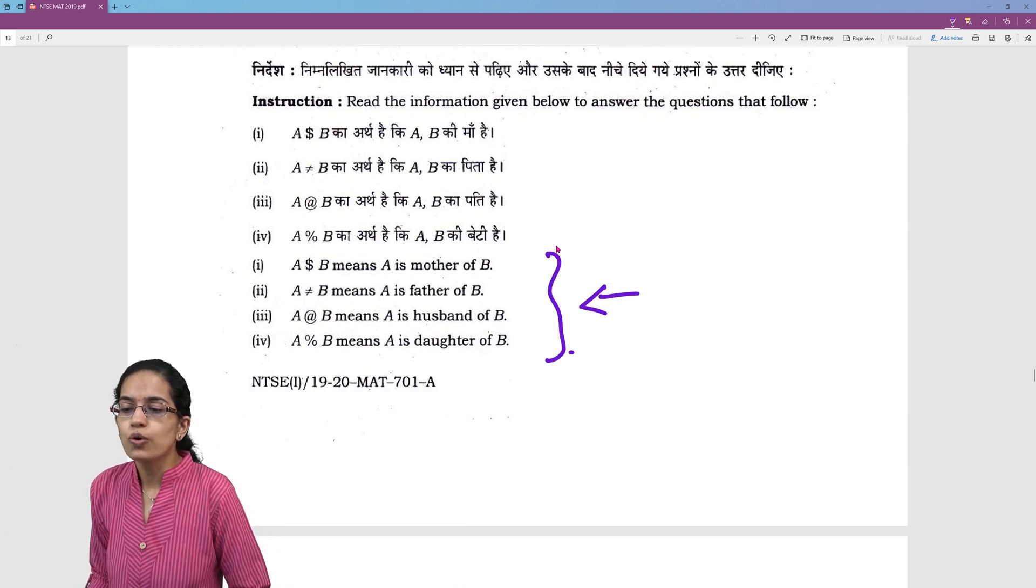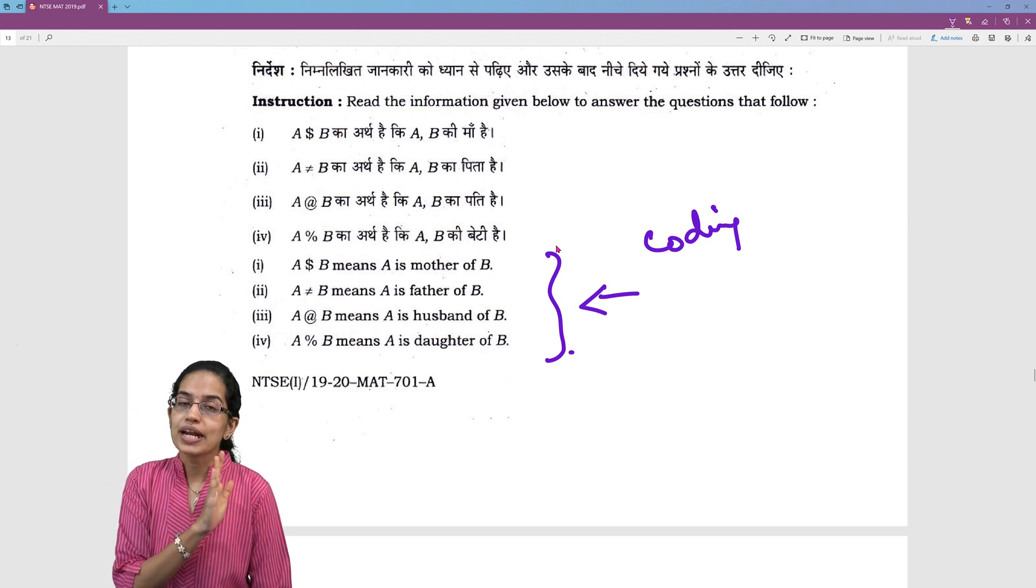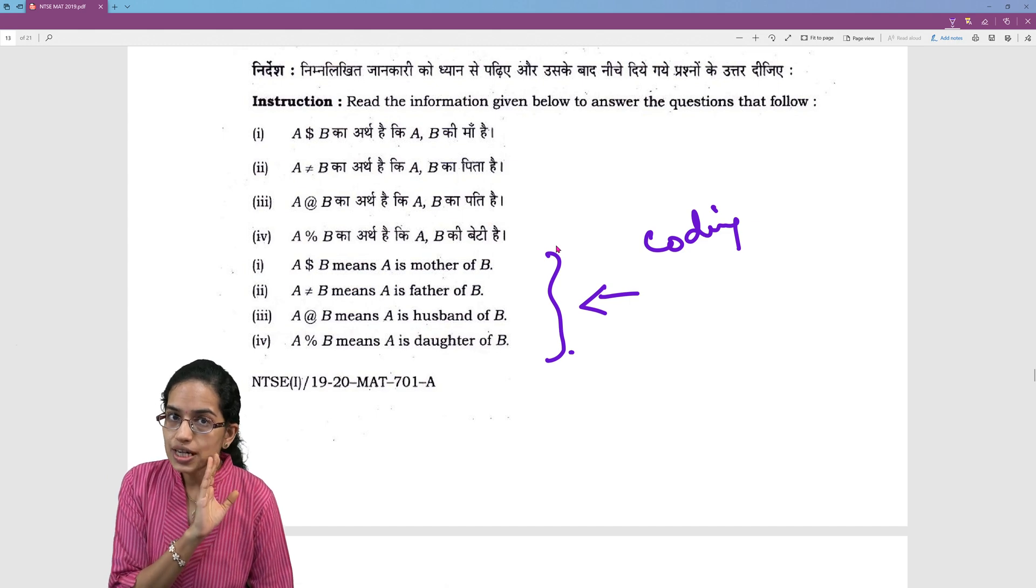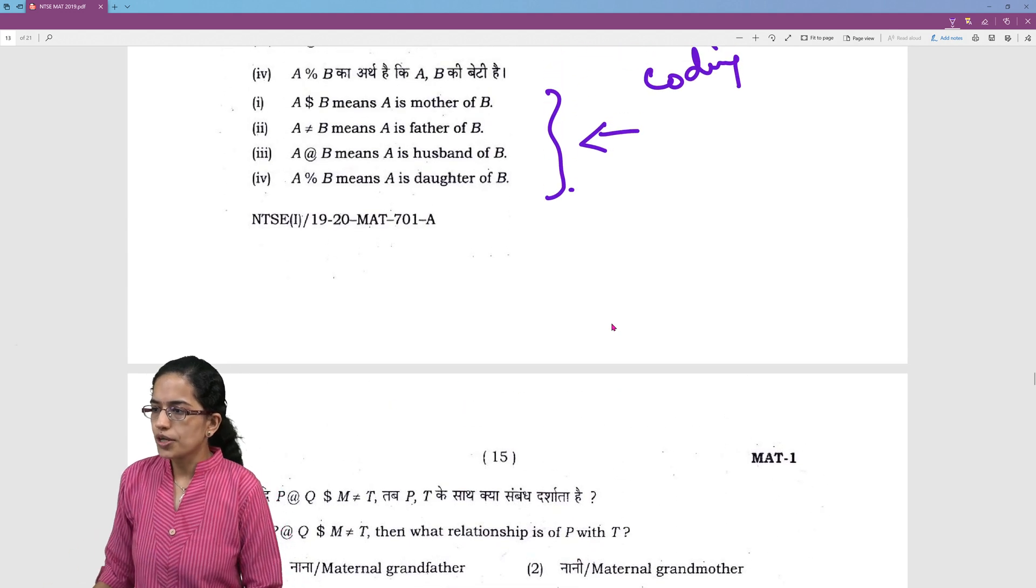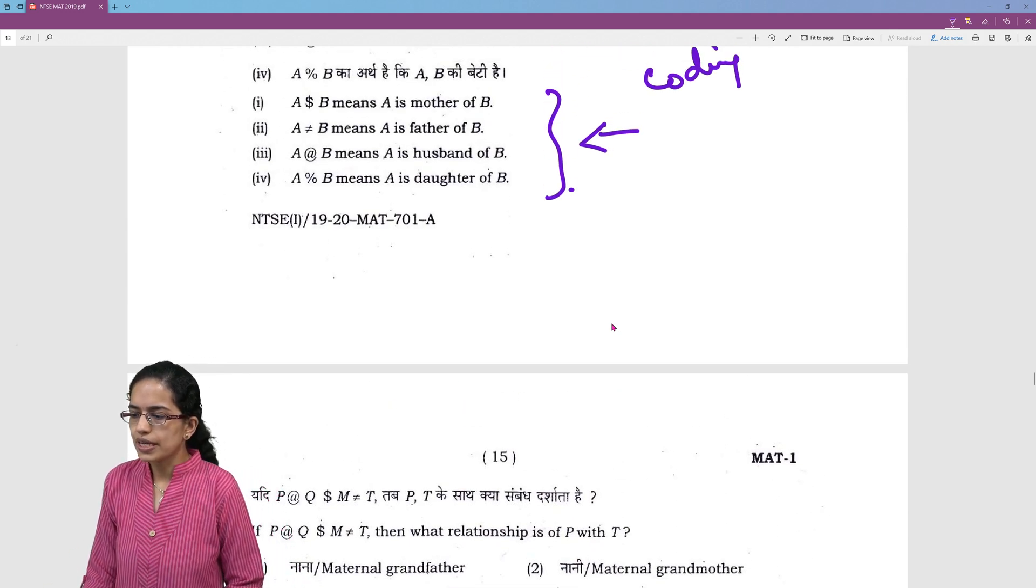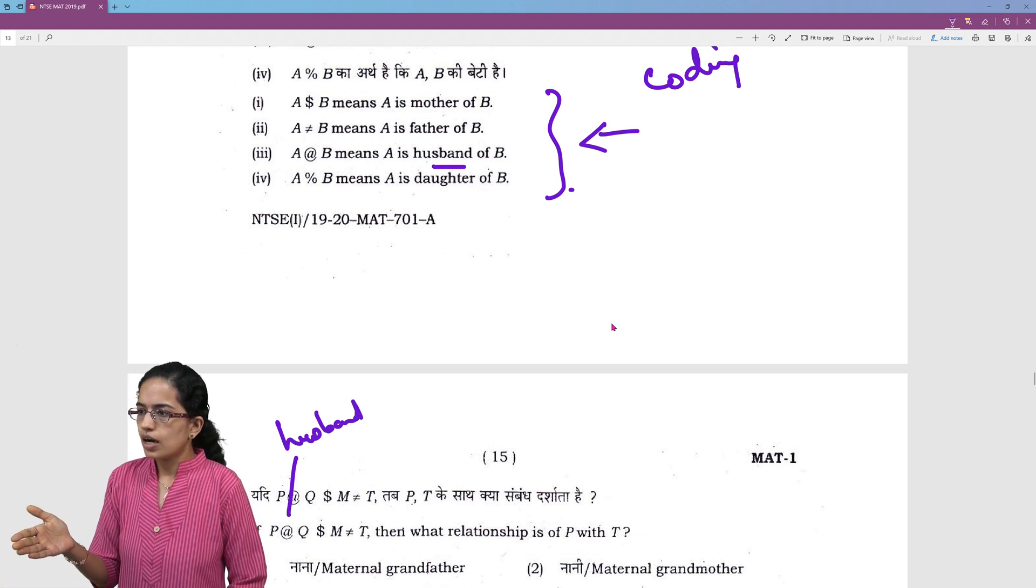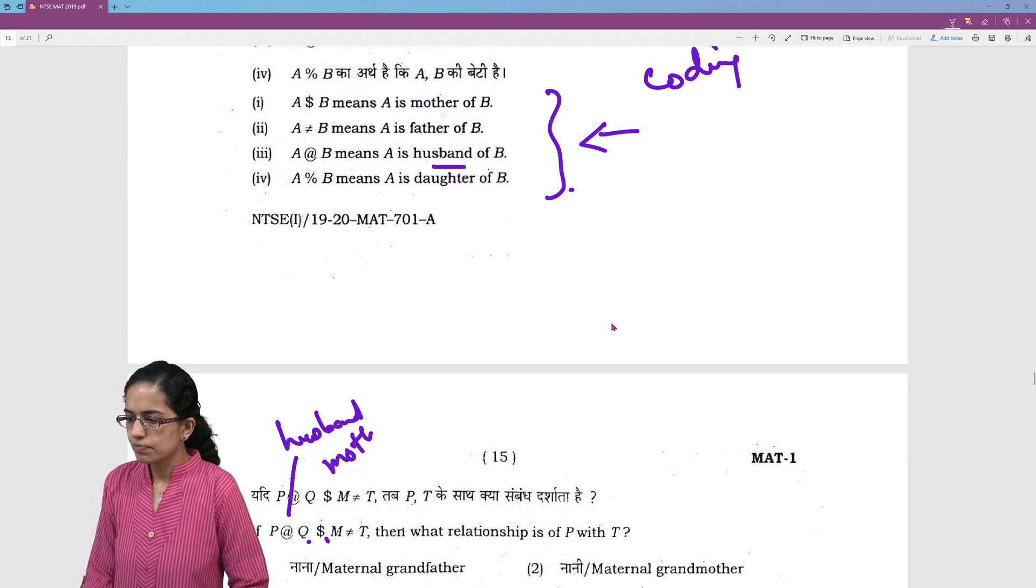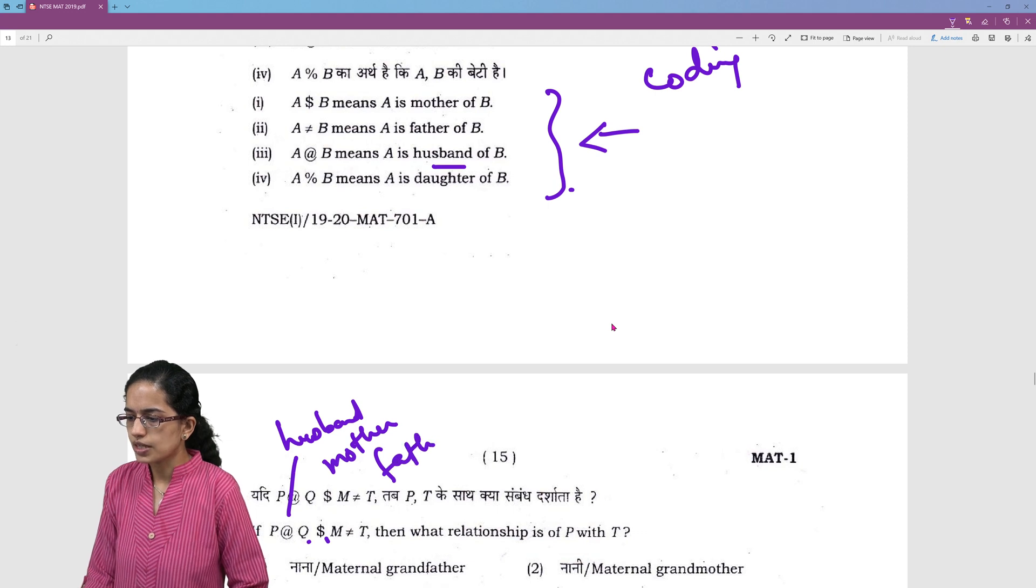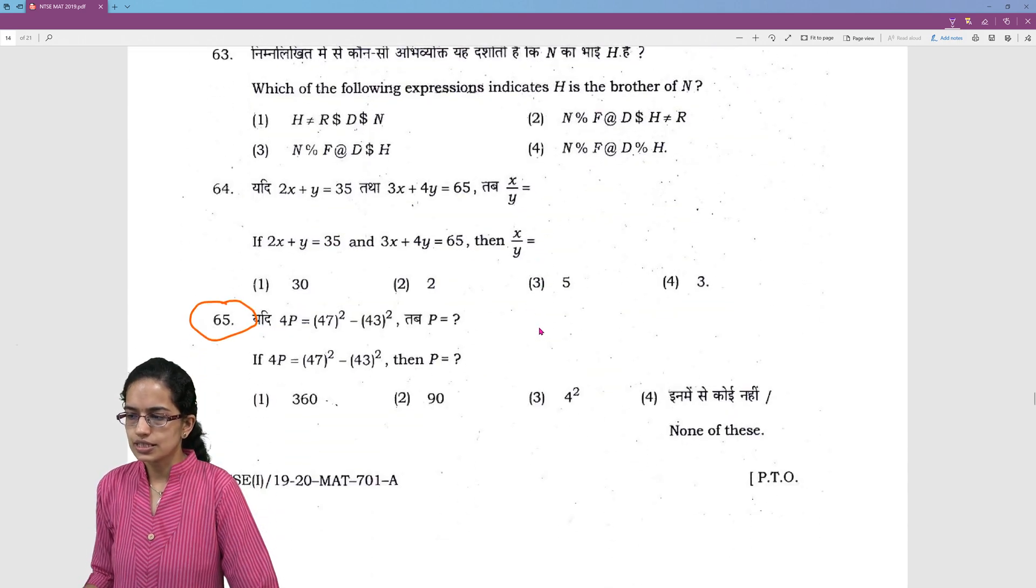Similarly, you have lots of coding decoding problems in blood relations. Coding decoding in blood relation is a separate section that we have covered in depth in our separate video. Go through that, very important, very interesting. So, what you have to do is, replace this. For example, P at the rate Q. So, I will replace it with at the rate means husband. So, P is the husband of Q. Then, dollar Q is the mother of B, mother of M. So, dollar represents mother and not represents father. And once I have this, I will just arrange it into the hierarchy as we have done in our blood relation classes and try to solve these questions.